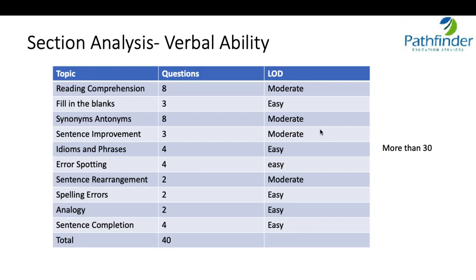Then, verbal ability, reading comprehension, you had fill in the blanks, you had synonyms and antonyms. There were eight questions on synonyms and antonyms, which tells you how much weightage they have for vocabulary. Sentence improvement, idioms and phrases, error spotting, sentence rearrangements, spelling errors, analogy, sentence completion and so on. Again, this section too was mostly simple. More than 30. In fact, I would say 30-35 questions would be a very good attempt for this particular section.